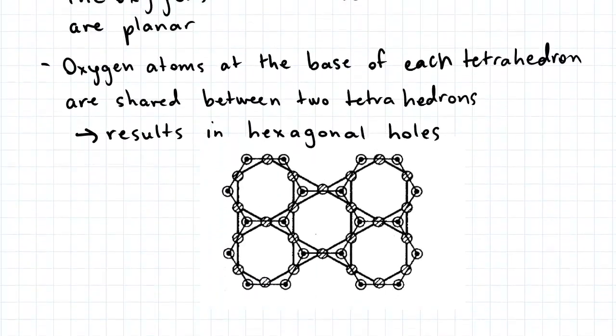If you look at this next diagram which shows the top view, you can see this formation results in the sheet having hexagonal holes.